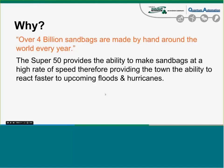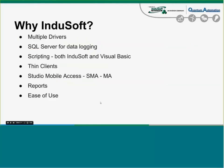So why do we have a sandbag-making machine? Over 4 billion sandbags are made by hand around the world every year. The world is 71% salt water, and every year there are natural disasters from tsunamis to hurricanes to floods down the Mississippi. The Super 50 provides the ability to make sandbags at a high rate of speed, giving towns the ability to react faster to upcoming floods and hurricanes.